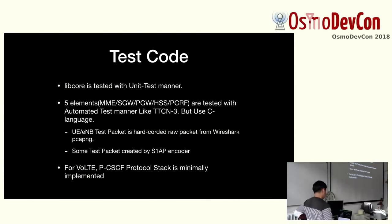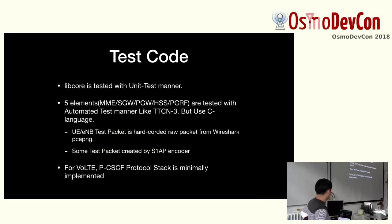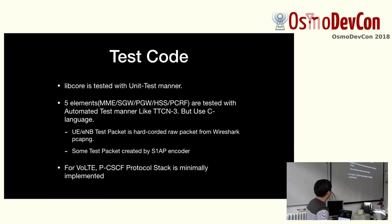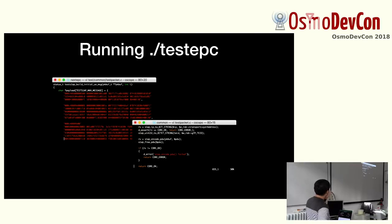Our test code is very simple compared to Osmocom. libcore is tested with a unit test manner, and the five elements are tested in an automated test manner like TTCN-3 but in C language. UE and eNodeB test packets are hard-coded raw packets from Wireshark, and some test packets are created by an S1AP encoder. For VoLTE, a minimal protocol stack is implemented.